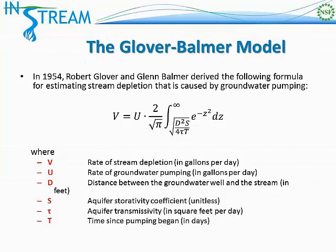U is the rate of groundwater pumping at the well causing the stream depletion. D is the distance between that groundwater well and the stream. S is the storativity coefficient of the aquifer the well is pumping from. Tau, the Greek letter tau, represents the transmissivity of that aquifer. And capital T represents the time that has elapsed since pumping began at the well.